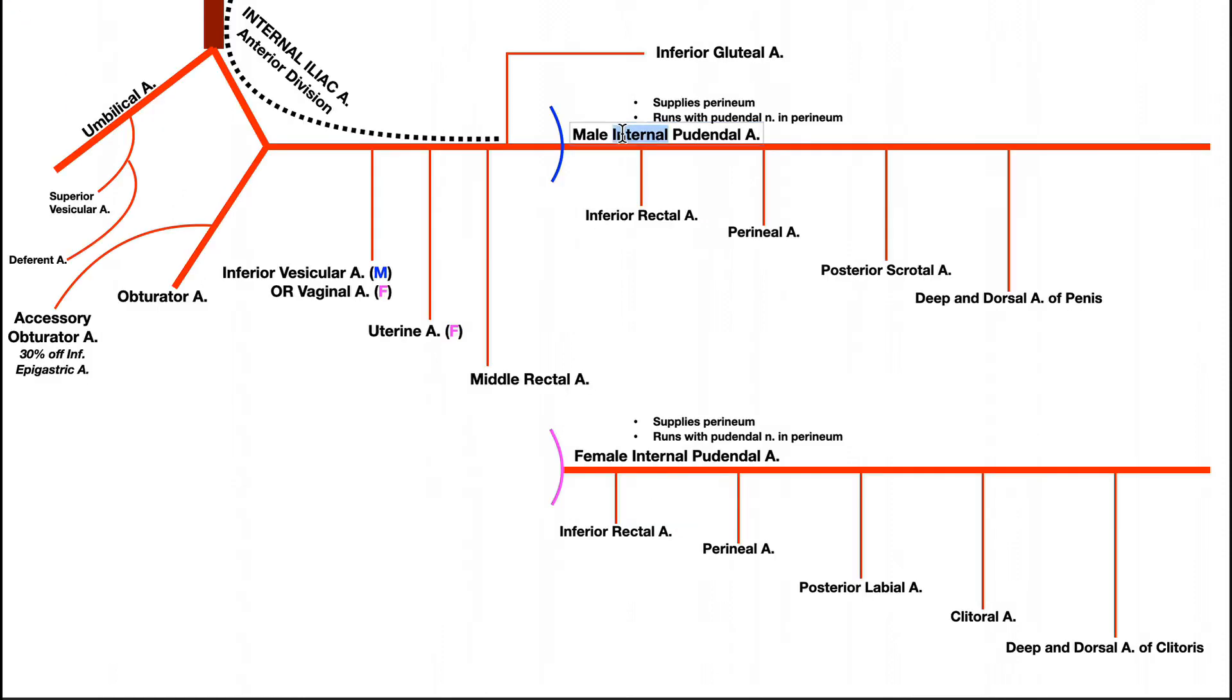So we've still got our internal pudendal artery here. Again, this picture is more or less just transposed. We've got the internal iliac artery's anterior division. It gives off all these branches. And then it becomes the internal pudendal artery. Now the reason I have it drawn twice here is because like the anterior division of the internal iliac artery, the internal pudendal artery exhibits a large amount of sexual dimorphism. Meaning that the arteries that come off change depending on whether or not we're looking at a male internal pudendal or female internal pudendal artery.